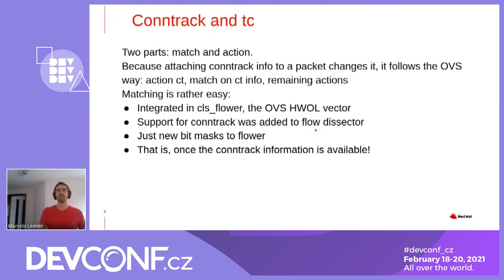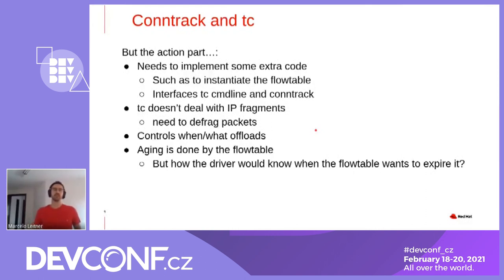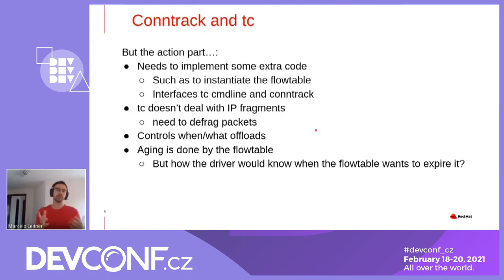The matching part is rather easy — it is integrated in the flower classifier, which is the OVS hardware offload vector. Support for Conntrack was added to flower classifier, so flower classifier can now go to the SKB and pull the bits that we are interested in from it and append to the mask. Then flower will just compare them — for flower it's just extra bits to be compared, once the Conntrack information is available. Now the TC action called CT — drive control and connection tracking, TC and CT — also has to interface the TC command line and Conntrack, making both worlds talk to each other.